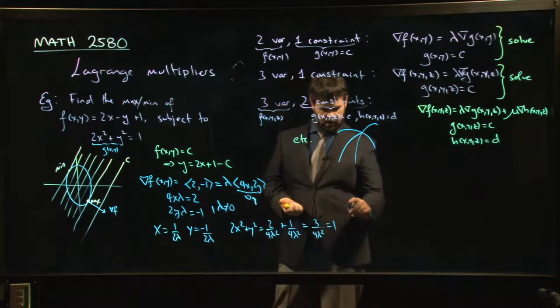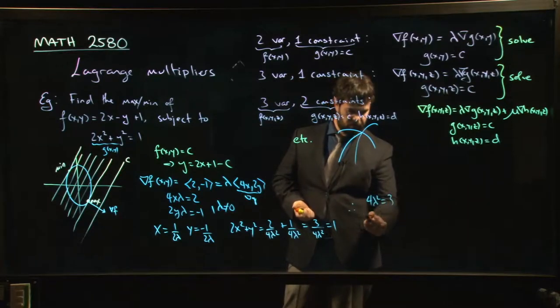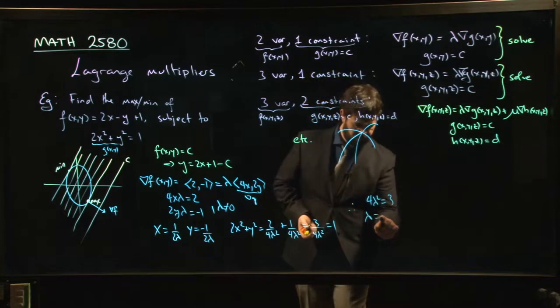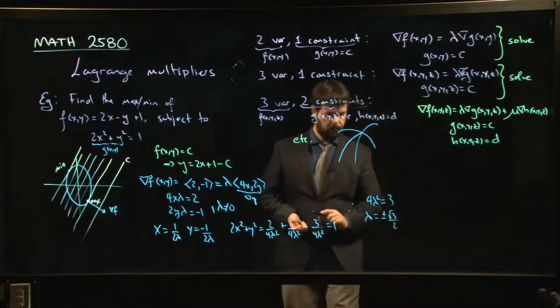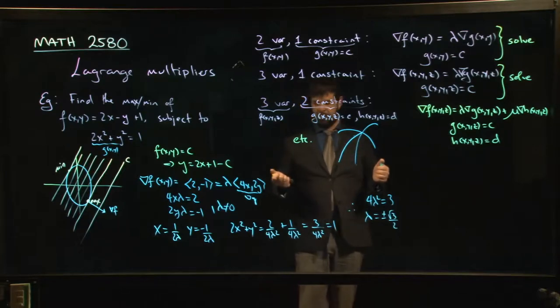Well, that means that 4 lambda squared needs to equal 3. So lambda has to be plus or minus root 3 over 2. And now with those values, I can come back and I can figure out what x and y have to be.